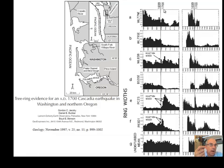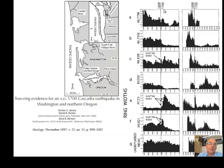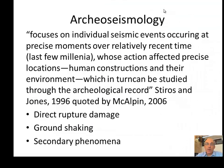This was very precise timing. The best confirmation came when researchers went to Japan and found orphan tsunamis — tsunamis with no local source in Japan. They realized it was the Cascadia earthquake in January 1700, which sent a tsunami across the Pacific — like a great detective story. Archaeoseismology focuses on individual seismic events occurring at precise moments over the last few thousand years, whose effects on human constructions and their environment can be studied through the archaeological record.